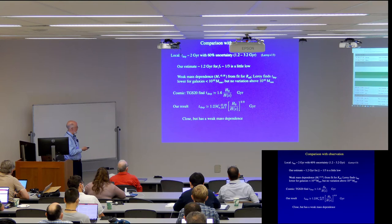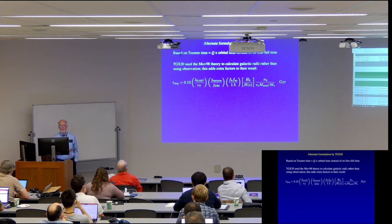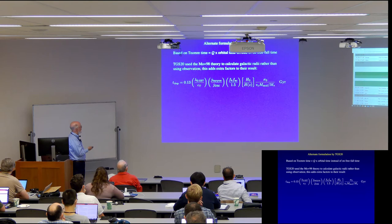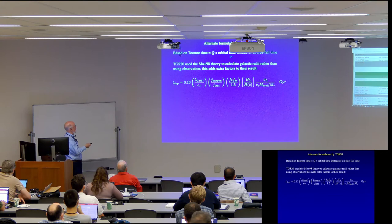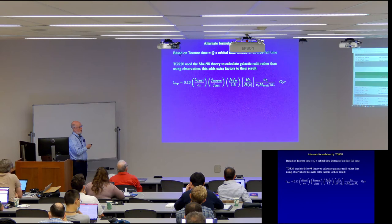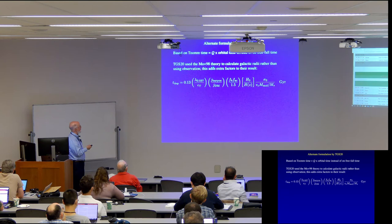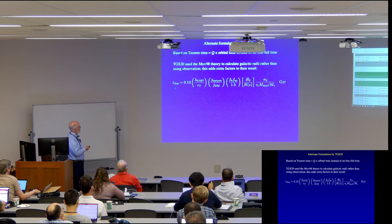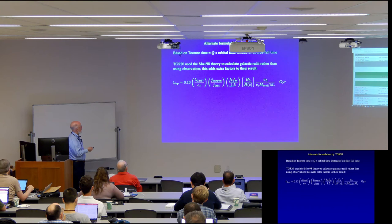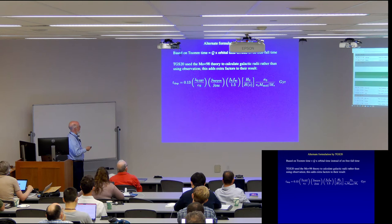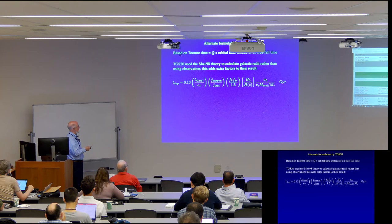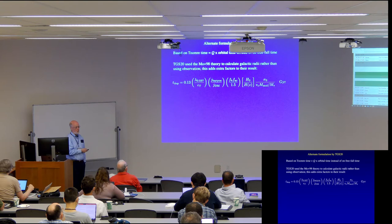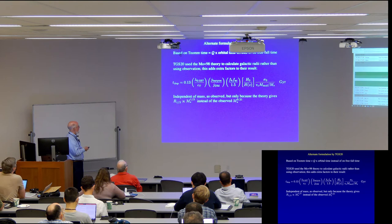So there is an alternate formulation in the same fantastic review article that TGS wrote. They actually then went ahead and presented a model. And it's based on the Toomre time, which is Q times the orbital time, instead of on the freefall time. And they also, whereas we used the observed results for radii, they used the Mo et al theory, which was discussed earlier. And so then they got some extra factors in their result. And this is their result here. And it is, you know, in approximate agreement with their observations also. It has some parameters. That's epsilon t, I think, is just a parameter that you fit. And then these various other factors here are a little bit uncertain. But as in the case of the parameters I've introduced, those are things that can be improved with more work. Okay.